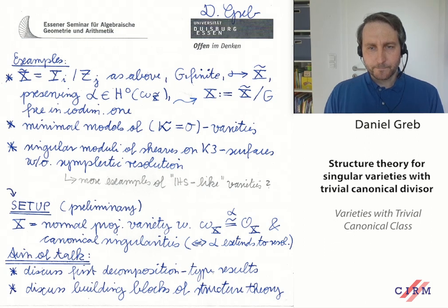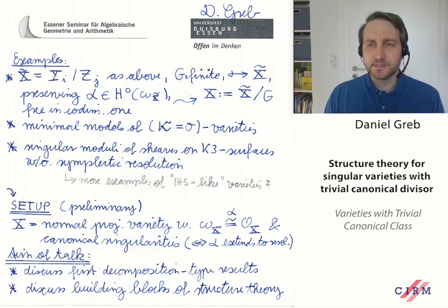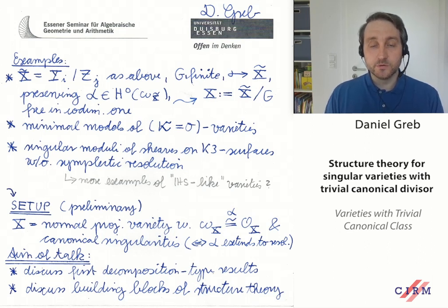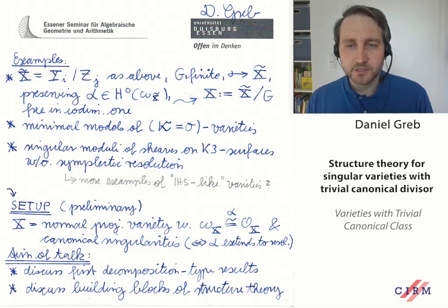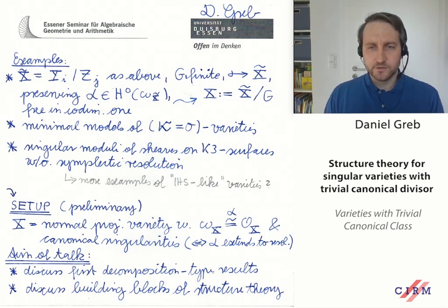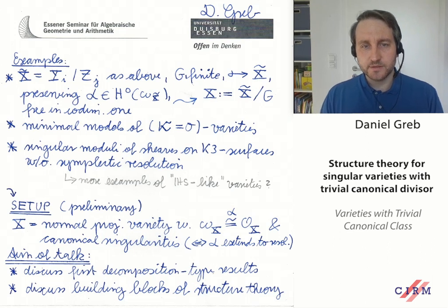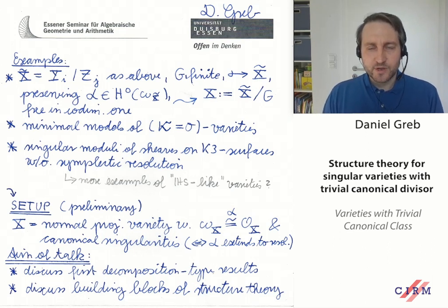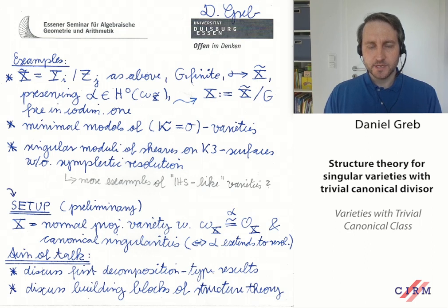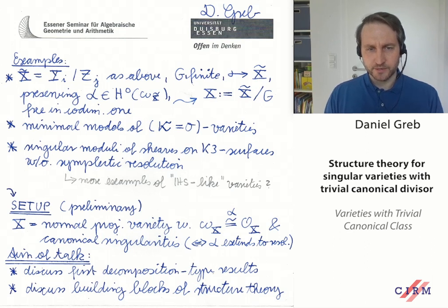Let me fix my setup. X will always denote a normal projective variety with trivial canonical sheaf. Sometimes I need the trivializing holomorphic n-form, which I call alpha. In addition, I assume the singularities are not too wild — especially motivated by the minimal model program — and I assume the singularities are canonical, which in this case means that alpha extends to any resolution of singularities.